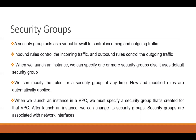We can also modify the rules for a security group at any time, and whatever new rules we are modifying will get automatically applied to our EC2 instance. When we launch an instance in a VPC — that is a virtual private cloud — we must specify a security group created for that VPC. After launching an instance, we can also change its security groups whenever required. Security groups are associated with the network interfaces.